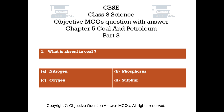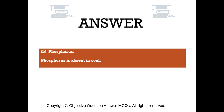Question number 1. What is absent in coal? Option A: Nitrogen. Option B: Phosphorus. Option C: Oxygen. Option D: Sulfur. The right answer is Option B, Phosphorus. Phosphorus is absent in coal.